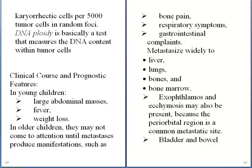Let us discuss the clinical course and prognostic features. In young children with neuroblastoma, you would see a large abdominal mass, fever, and weight loss. In older children, the disease may not come to attention until metastasis produces particular manifestations such as bone pain, respiratory symptoms, and gastrointestinal complaints. The tumor metastasizes widely to liver, lungs, bones, and bone marrow.